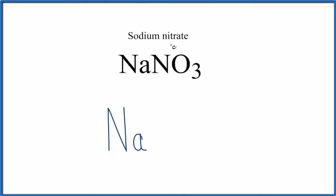Let's write Na. Then NO3 is called nitrate. When you see this ATE at the end, you know that's a polyatomic ion, so it's going to stick together. The nitrogens and oxygens are tightly bound together, so we'll write NO3.